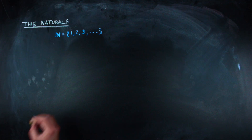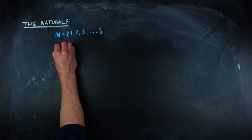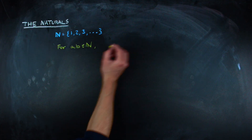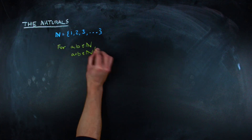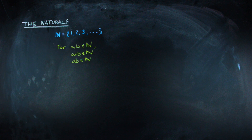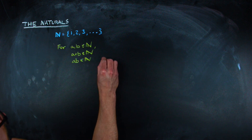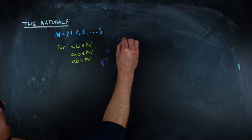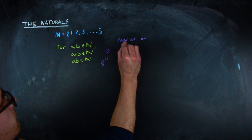Without jumping too far into the deep end, we can actually do some pretty basic things with natural numbers. For one, we can take two natural numbers and add them together and get another natural number. And for two, we can take two natural numbers and multiply them together to get yet another natural number.